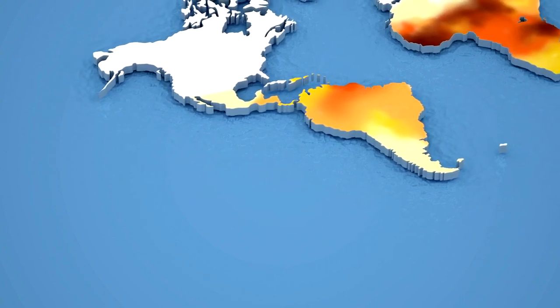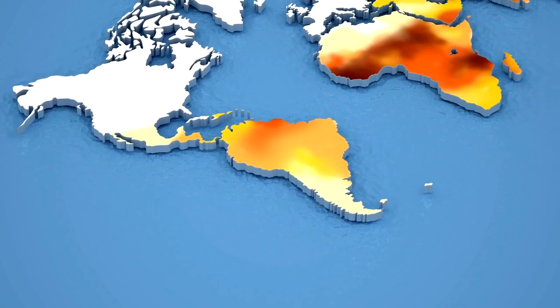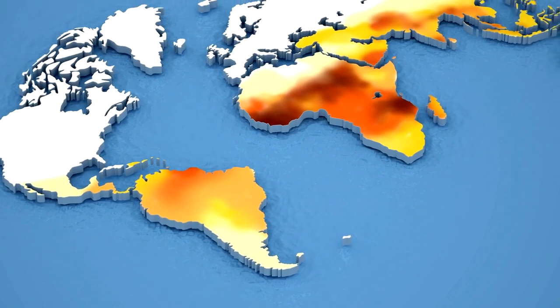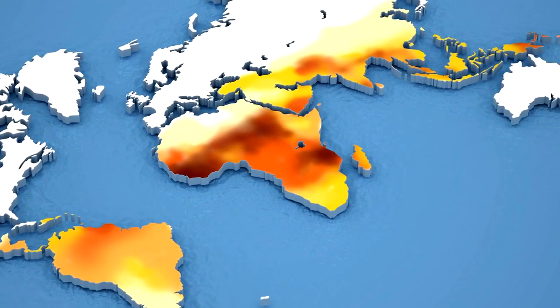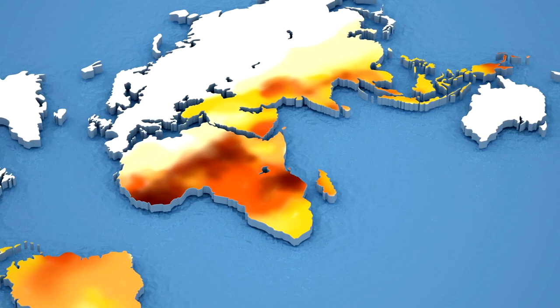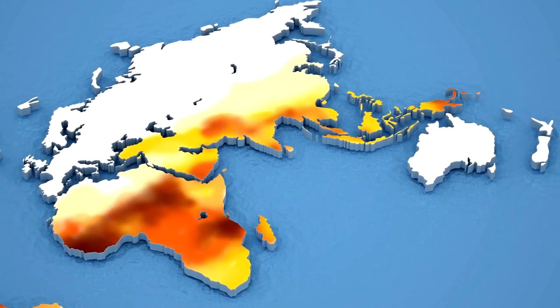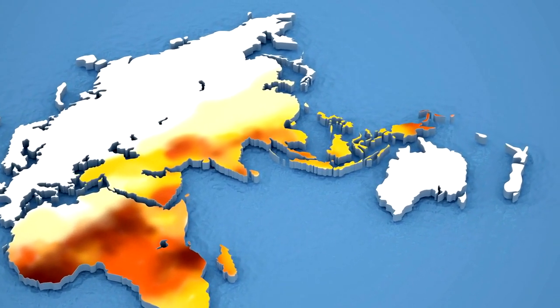Number 12. What regions of the world are most affected by malaria? Malaria is most prevalent in sub-Saharan Africa, South Asia, Southeast Asia, Central and South America, and parts of the Middle East and Oceania.